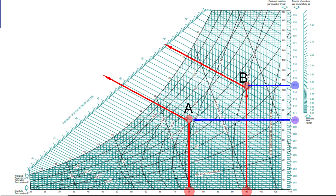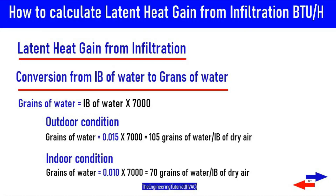You need to convert the humidity ratio from pounds of water to grains of water. The conversion is: pounds of water times 7,000 equals grains of water. For the outdoor condition, 0.015 pounds of water times 7,000 gives 105 grains of water per pound of dry air.